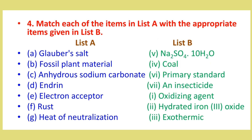Now let's see what we have done. Glauber's salt: Na2SO4·H2O. Fossil plant material: coal. Anhydrous sodium carbonate: primary standard. Andrin: an insecticide. Electron acceptor: oxidizing agent. Reds: hydrated ion. Hydron: neutralization.